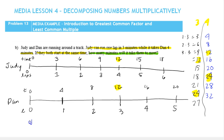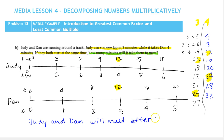So Judy and Dan will meet after — or at — 12 minutes, because 12 is the least common multiple of 3 and 4. And if they kept running forever, they'd keep meeting again at 24, 36, and so on.